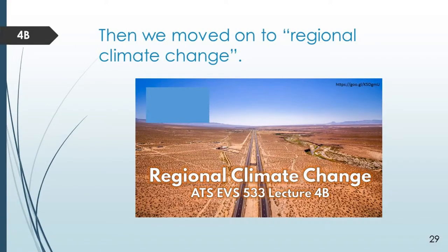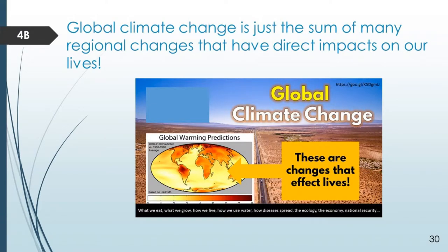Then we moved on to Lecture 4b, where we started saying let's forget about global climate change for a little bit and talk about this in a more regional context. What could we know about the future? It turns out we're going to have some uncertainty associated with regional climate change. It's not particularly useful to compare the climate of one place versus another in isolation.